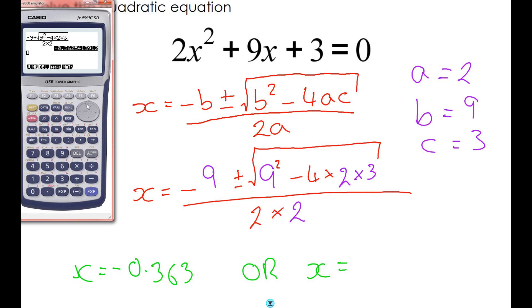So x is -0.363363, or instead of typing it all out again, just use the buttons to go back and replace that plus with a minus. So x equals -4.14.